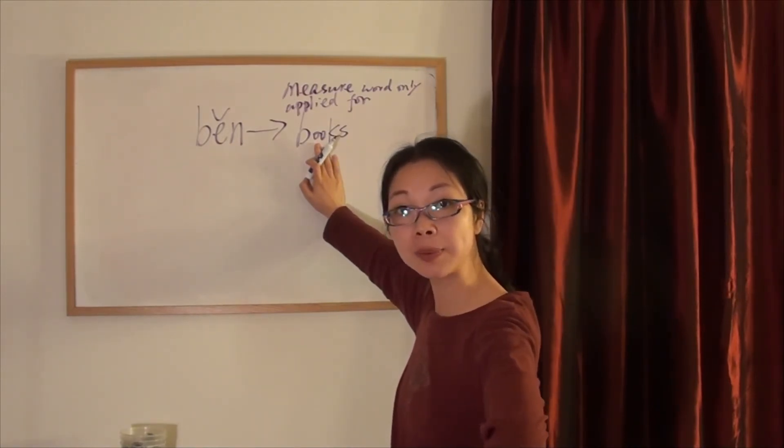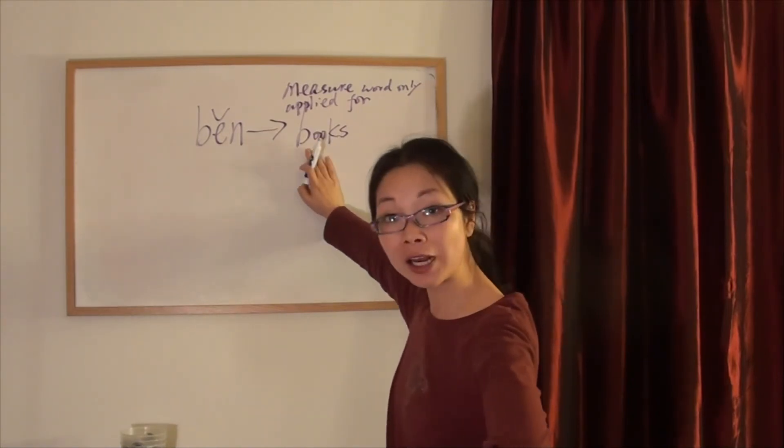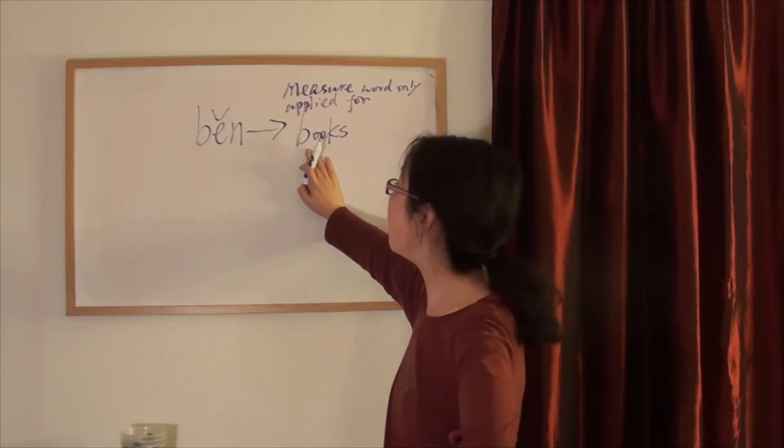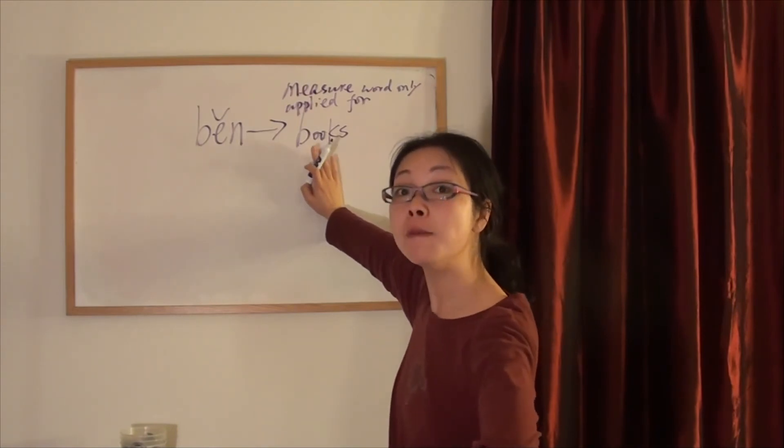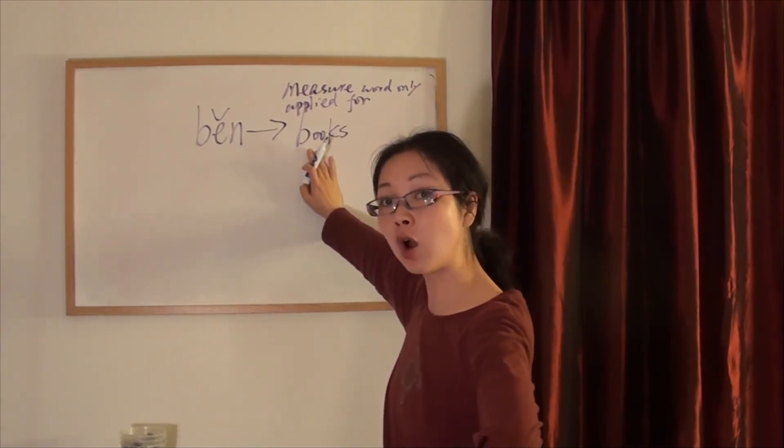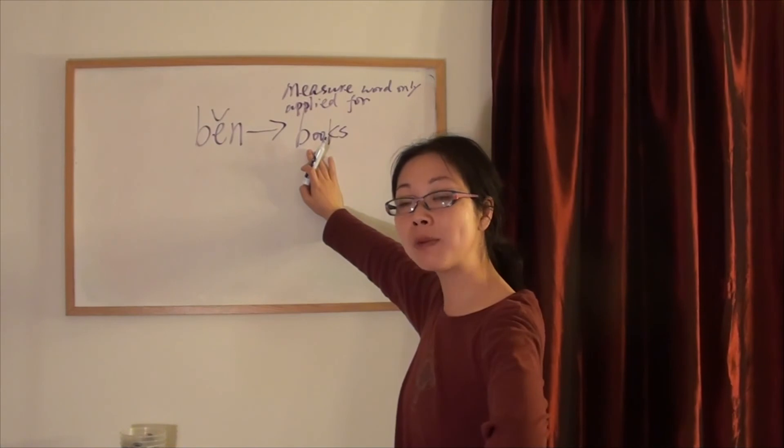Today we will just say 一本书, 三本书, 四本书, 五本书, 六本书. You got it? 本 is the measure word only for books. That is all I want you to remember today.